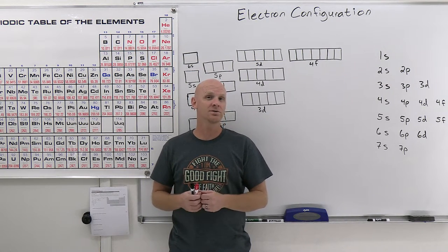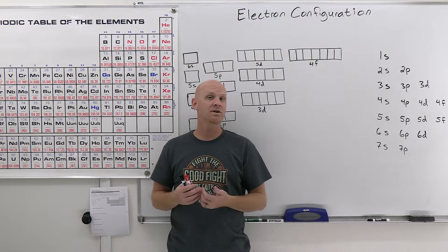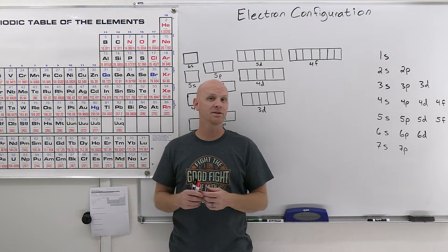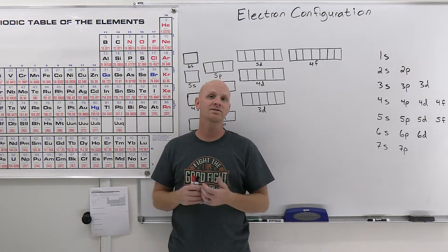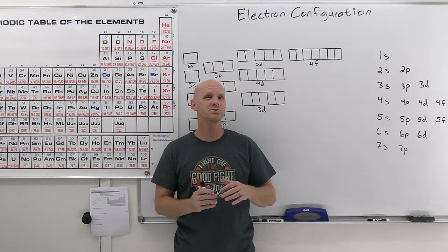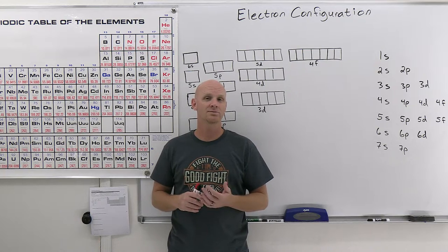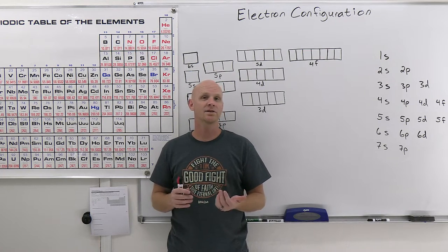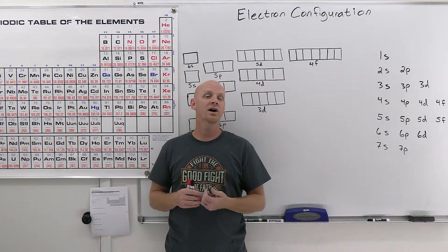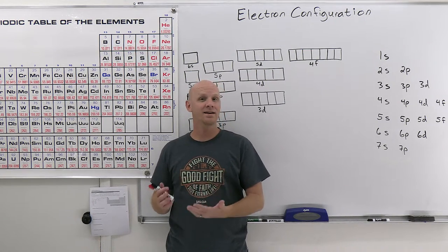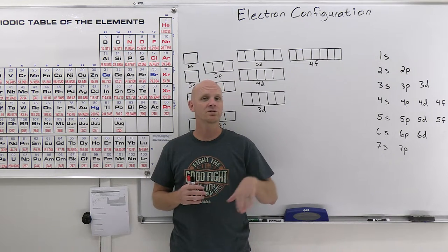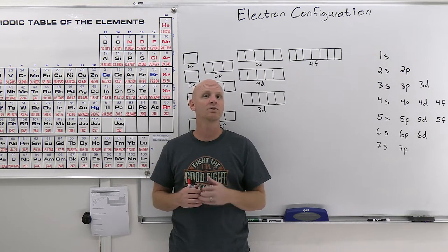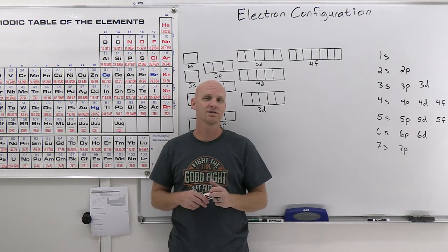We'll talk about ions, including some of the transition metal cations, which can be a little bit unique. We'll talk about the number of valence electrons and how you relate that to an atom or ion's electron configuration. And finally, we'll also talk about the excited state when an electron is promoted to a higher energy orbital, and contrast that with the ground state.